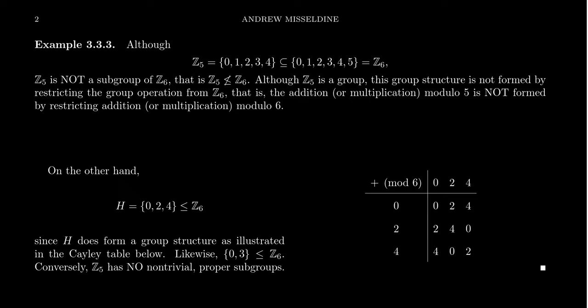It has to be a subset using the same operation as the overset in order for it to be considered a subgroup. So let me provide a counterexample to what I'm trying to describe here. Consider the groups Z5 and Z6 with respect to modular addition.